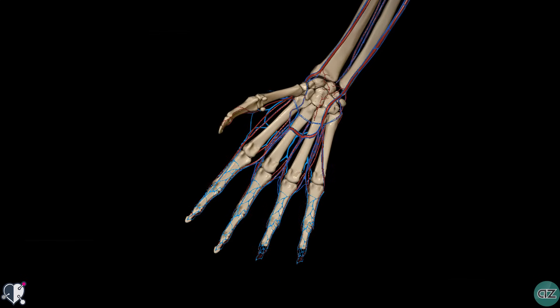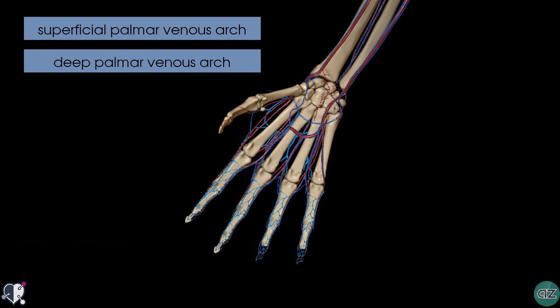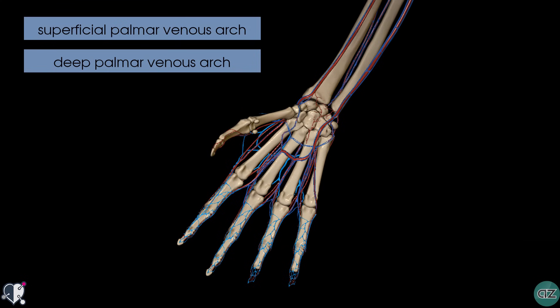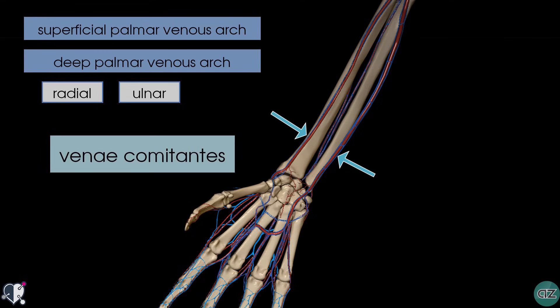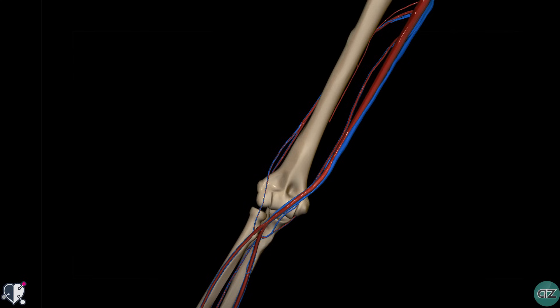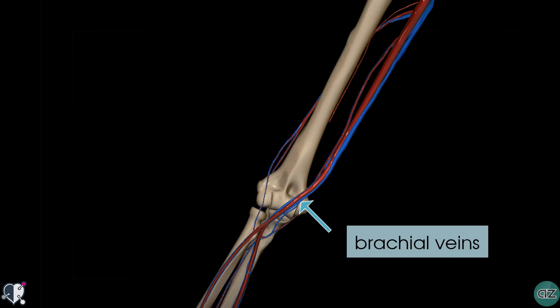Now, a few quick notes about the deep venous system of the upper limb. The deep veins follow the arteries. In the hand, there are superficial and deep palmar venous arches which accompany the corresponding arterial arches. Coming off these deep venous arches are the radial and ulnar veins, which accompany the radial and ulnar arteries of the forearm. These veins that accompany arteries are known as venae comitantes, which is Latin for accompanying veins. Just before the elbow, the radial and ulnar veins unite to form the paired brachial veins, which accompany the brachial artery.